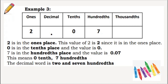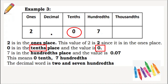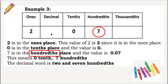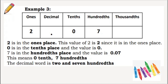Here's another example for us to study. The given number is 2.07. Digit 2 is in the 1's place; its value is 2. Zero is in the 10's place and the value is 0. Seven is in the 100's place and the value is 0.07. This decimal number is read as 2 and 7 hundredths.